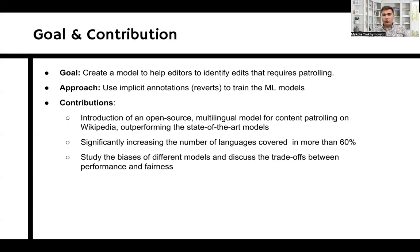We introduce a new generation of open-source multilingual model for content patrolling on Wikipedia. Our tool outperformed the current state-of-the-art and increased language coverage by more than 60%. We also study the fairness and trade-offs between fairness and performance of the models.